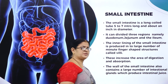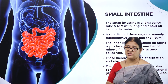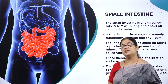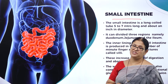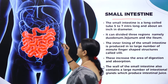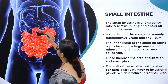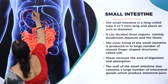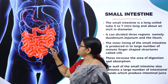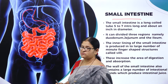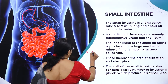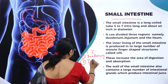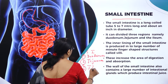Moving on to the small intestine — a very important part of the digestive system. The major portion of digestion of food takes place in the small intestine, making it the prime player in the digestive process. It is a highly coiled structure. Here you can see the stomach leading into the small intestine. The small intestine is divided into three parts: duodenum, jejunum, and ileum.